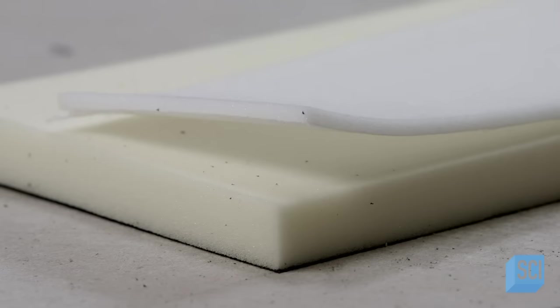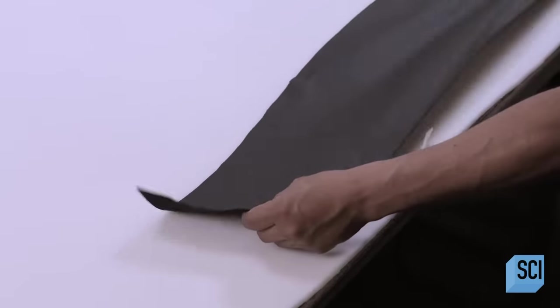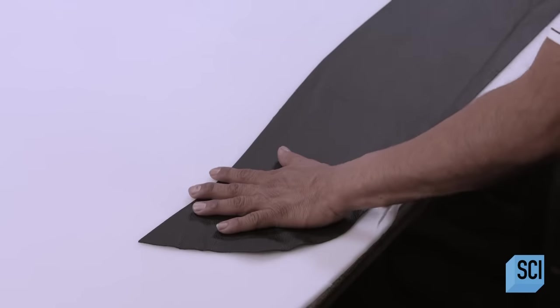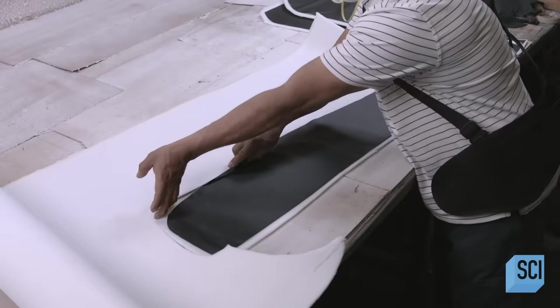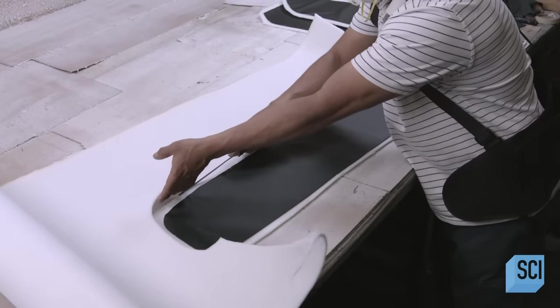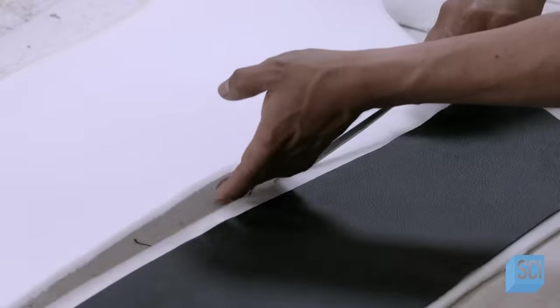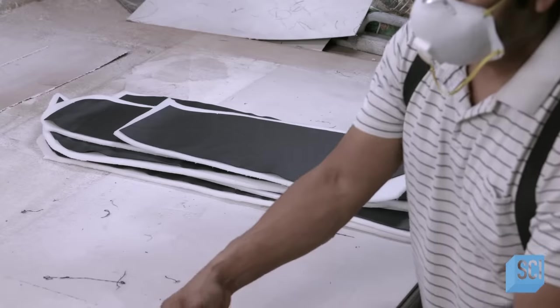Once all the leather pattern pieces have been accumulated, another worker cuts foam cushioning for backing. The density of the foam in the chair varies. He uses more rigid foam for the chair's contoured cushioning so it will hold its shape.